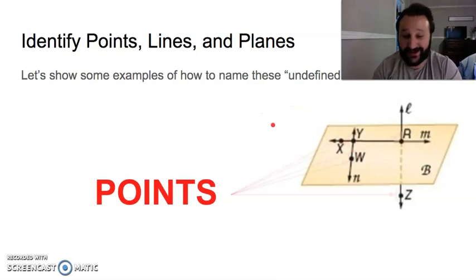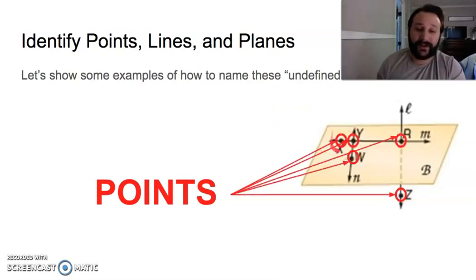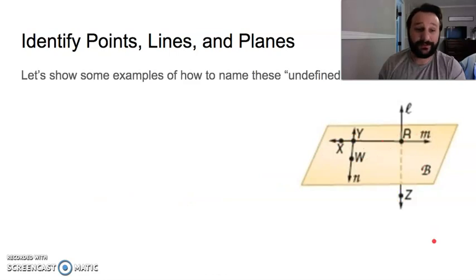We've got these points here. I have pointed them out. These points here are the points X, Y, W, R, and Z. Those are our points. That's how they're named with these letters, normally a capital letter. That's how it's named.